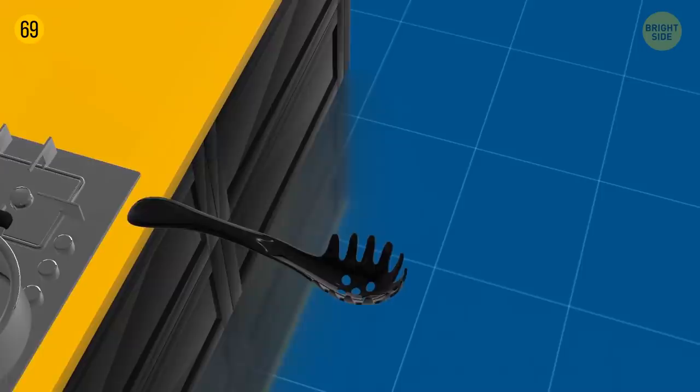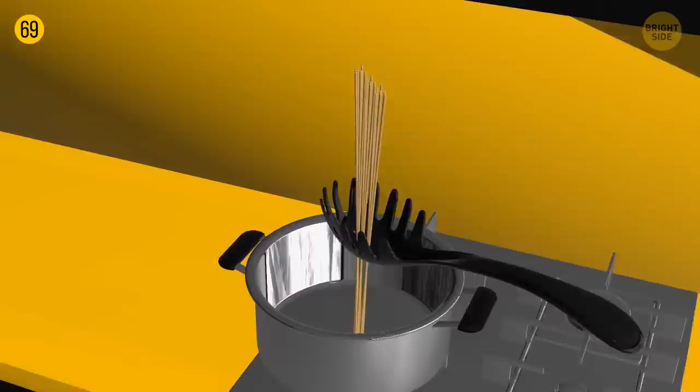A pasta spoon has a hole in its handle, which can definitely be helpful when you grab pasta and want to let water drain out. However, it also comes as a good measuring tool since the hole fits around one serving of pasta.